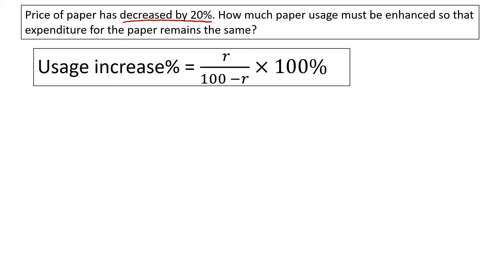Paper's price decreased by 20 percent. To keep expenditure the same, usage must increase. The calculation is 20 divided by 100 minus 20 into 100 percent, which equals 25 percent. So if the price decreases, usage must increase by 25 percent.